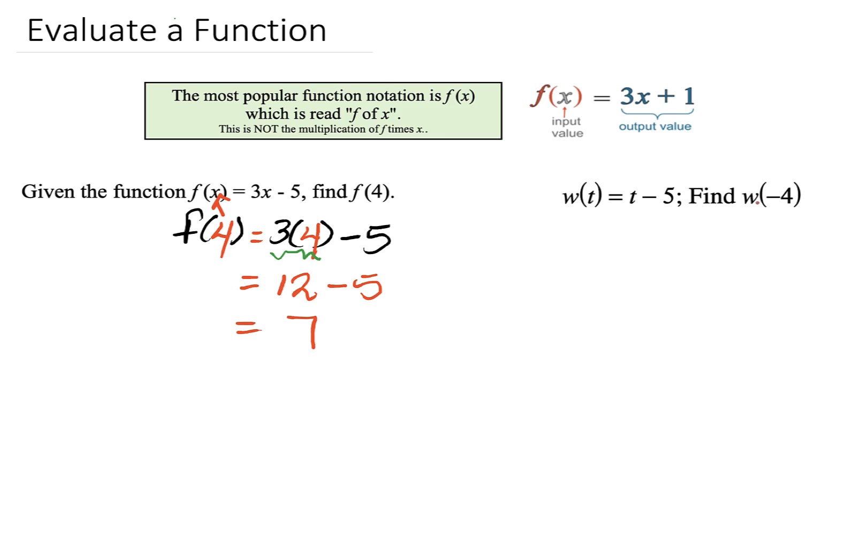We want to find w of negative 4. Wherever I see t in my output value, I'm going to replace it by negative 4. So this will be negative 4, take away 5. And here, we don't really need PEMDAS. This is just a simple subtraction of integers. Negative 4, take away 5. My answer is negative 9.